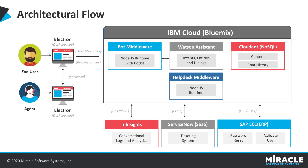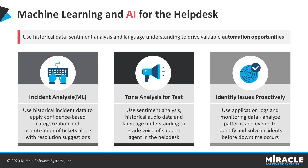The architectural flow looks like this: we have an Electron app used by the end user and an Electron app used by the agent. Both talk to IBM Cloud, which runs IBM middleware — Watson Assistant, Cloud DB to store chat history, and help desk middleware running the Node.js runtime. We also have integrations with ServiceNow, SAP, and M Insights. M Insights is a proprietary platform built by Miracle Software Systems, which uses Node.js libraries to log conversations and provide analytics — helpful once your chatbot is in production. We also have a layer of machine learning and AI for the help desk, which can be used for incident analysis or tone analysis — for example, automatically escalating a user to an agent if they are unhappy. It can also generate application logs, monitoring data, and patterns to solve incidents before downtime occurs.